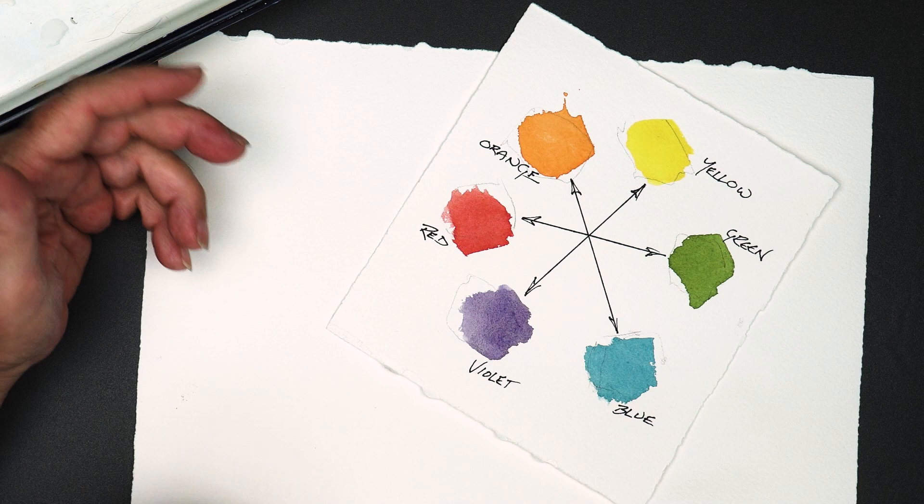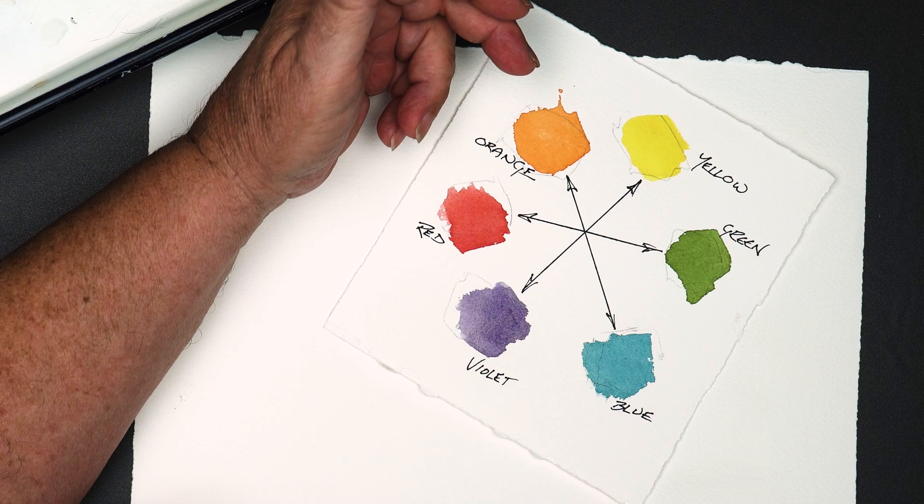To get started, let's look at a color wheel. The complementary color is its opposite on the wheel.